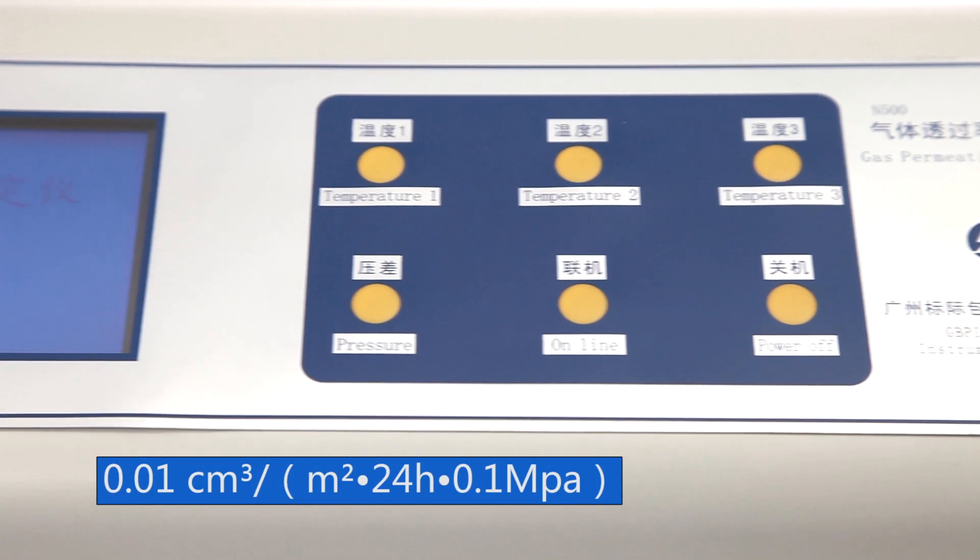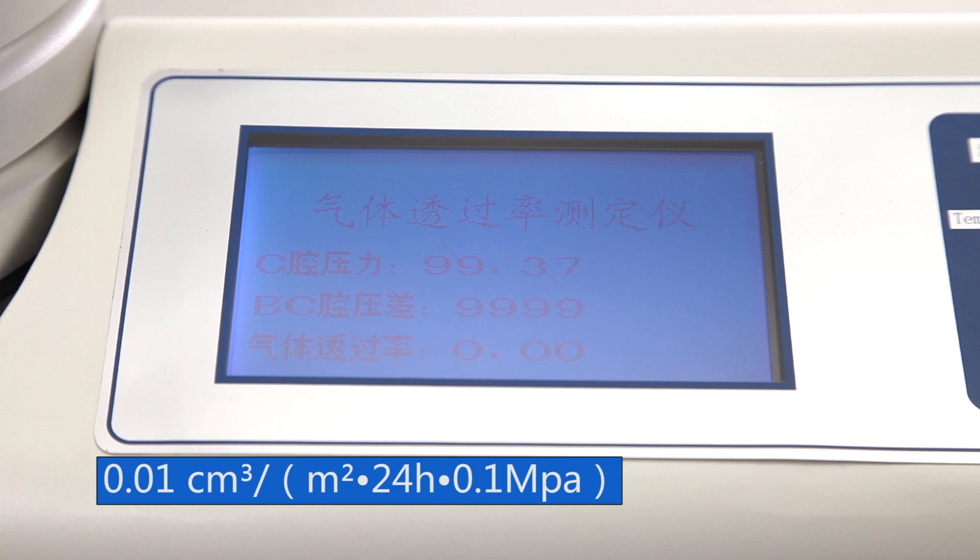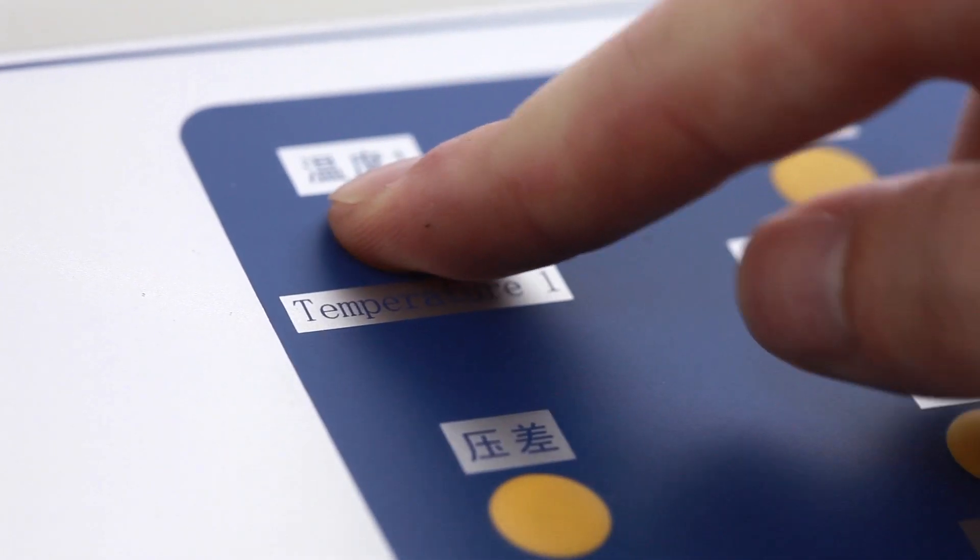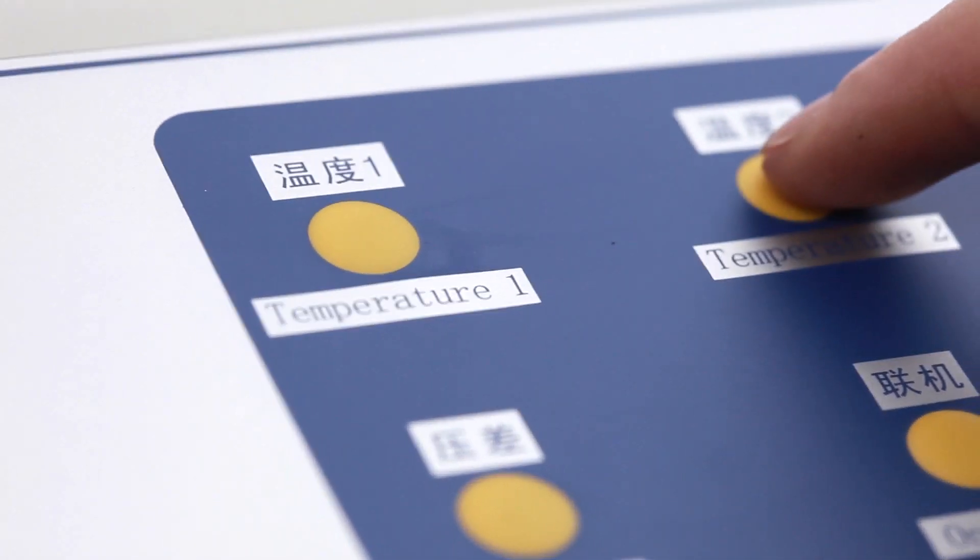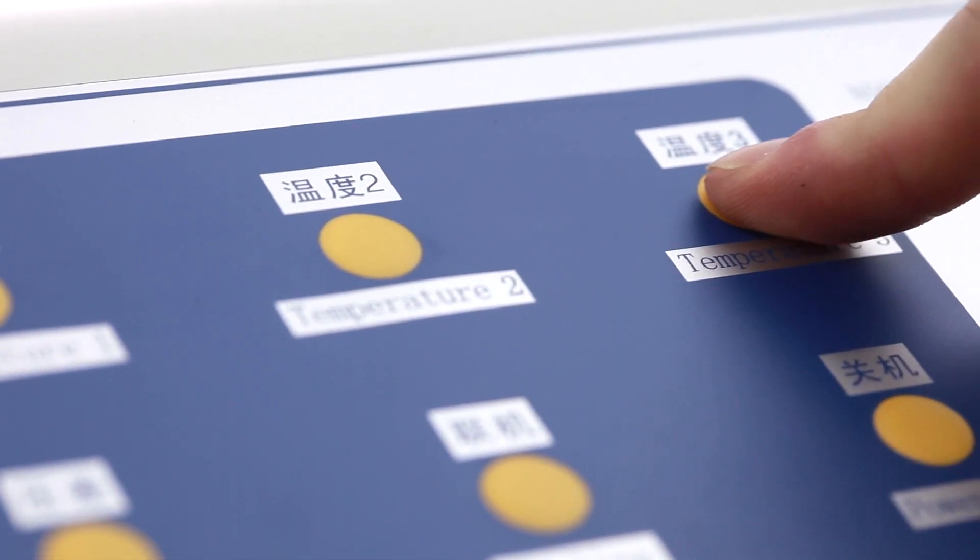Precision is 0.01 cubic meter per square meter, 24 hours, 0.8 MPa. Temperature control adopts advanced electromagnetic technology, program controlled, automatic temperature increase and decrease.